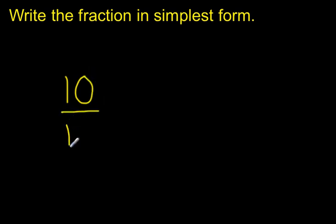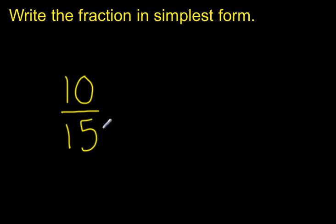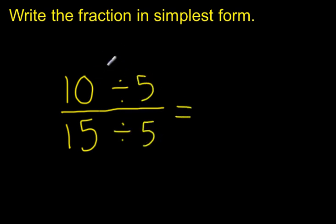Let's try another example: 10 fifteenths. I want to ask myself that first question — are they both even? Well, 10 is even but 15 is not; 15 is not a multiple of 2. I might ask, are they divisible by any other number? Using my divisibility rules, I see that 10 ends in 0 and 15 ends in 5. There's a divisibility rule of 5 if a number ends in 5 or 0, so I know I can divide each of these by 5.